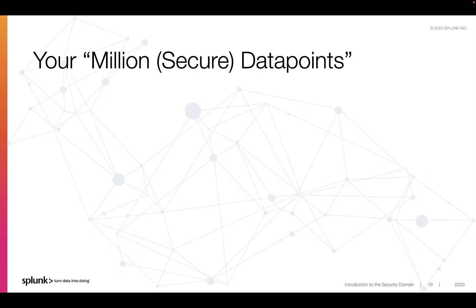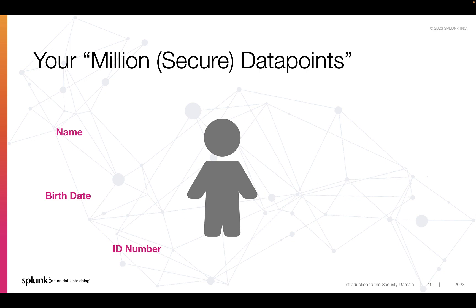Starting with the type of data that should be protected. While data comes in many shapes and sizes, there are a few examples of very common data that we all interact with. For example, information that can be used to identify one person, like a combination of a full name and date of birth or a unique identifier like a social security number, is usually classified as PII — personal identifiable information. There are laws and regulations that define PII in detail and control what rights and responsibilities individuals and organizations have regarding this type of data.